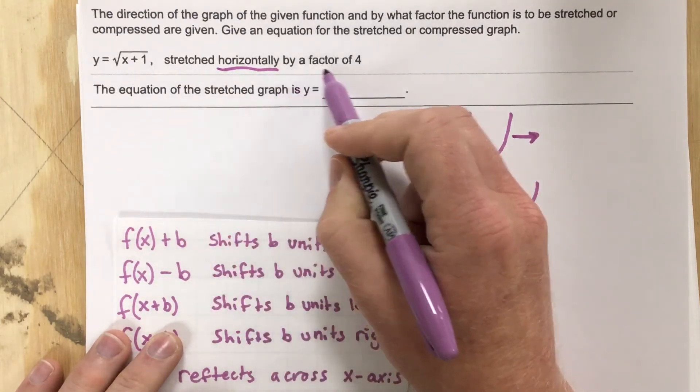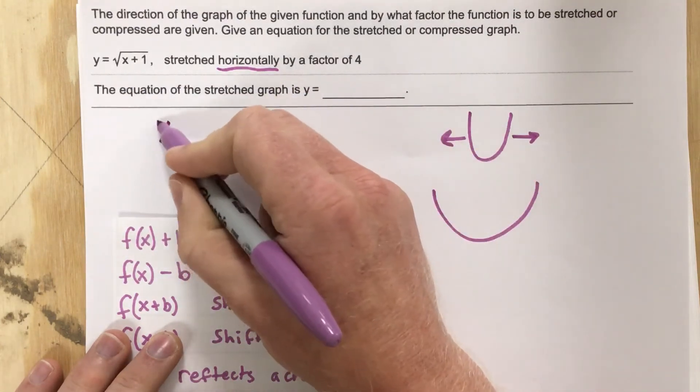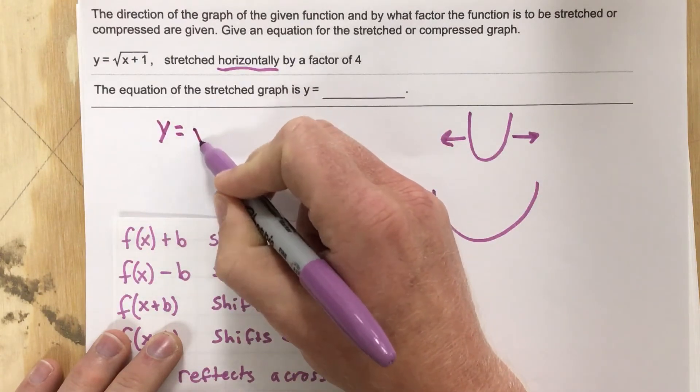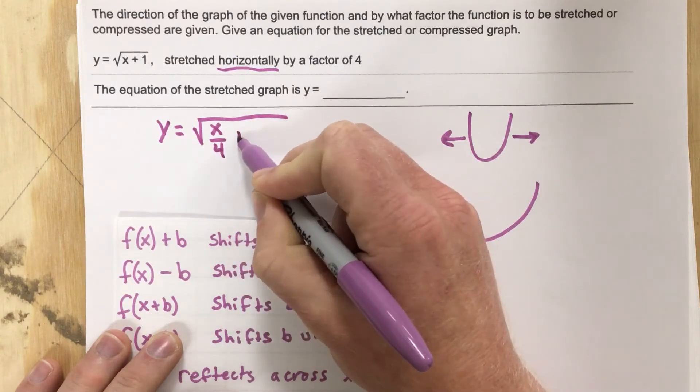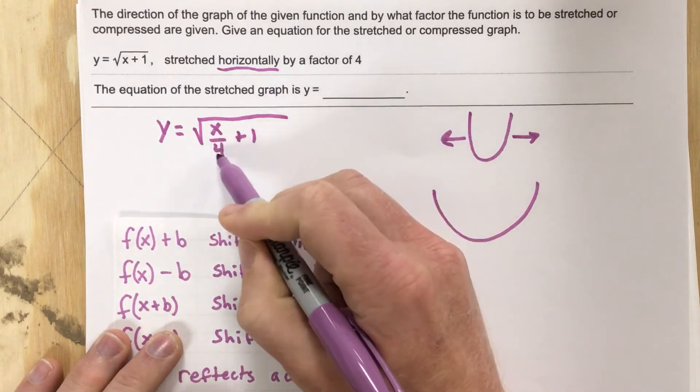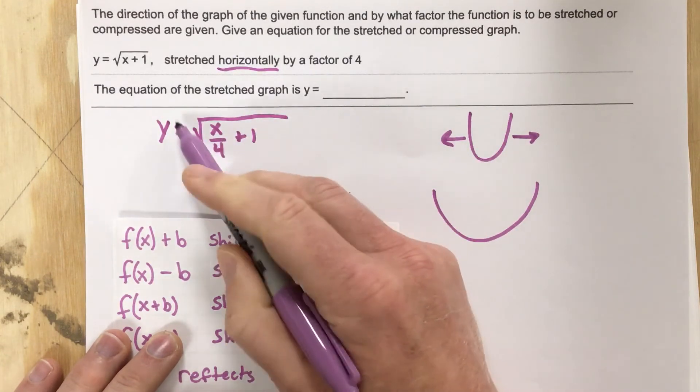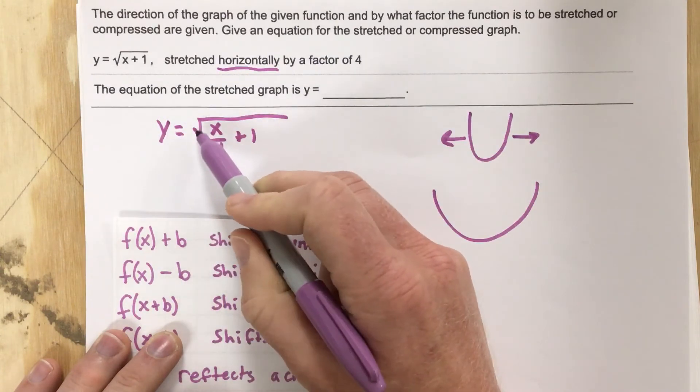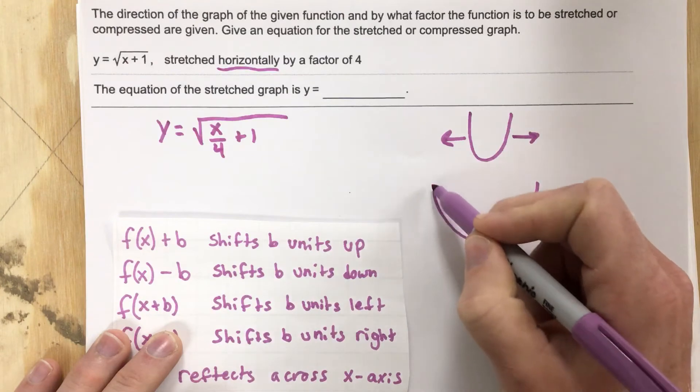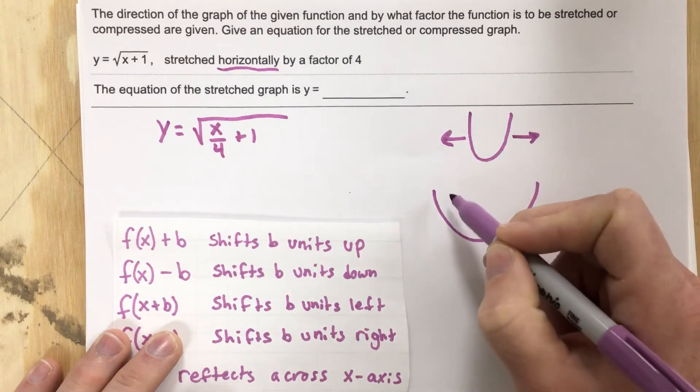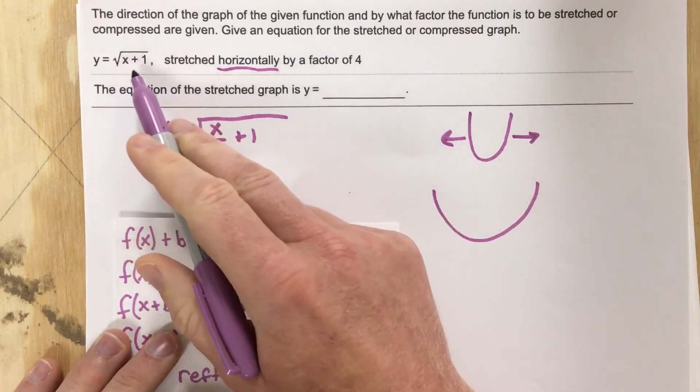So if I want to go by a factor of 4, I'm going to say y equals root, and then inside here I'm going to divide the independent variable by 4. Because when I divide the independent variable by 4, what does that do to the y values? Well, that's going to shrink the y values, meaning they're going to go up slower, which is going to widen the u for the parabola, and it'll do the same thing for the radical.